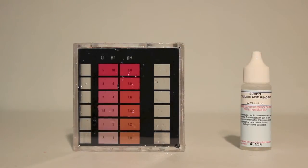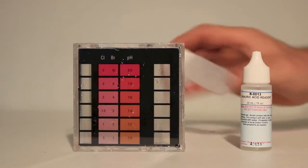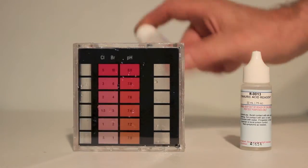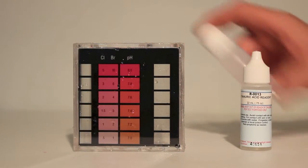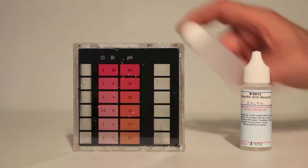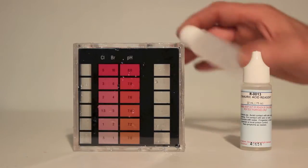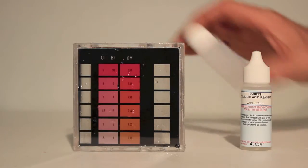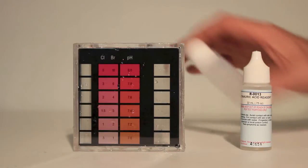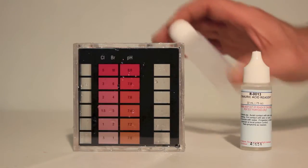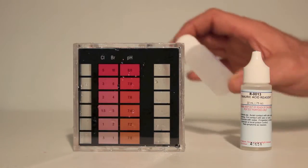So while we're shaking, we'll explain a little bit about what cyanuric acid is. Cyanuric acid is also called conditioner and stabilizer. It protects the chlorine from the ultraviolet light of the sun. It holds the chlorine in the water longer, which is why we use it outdoors and not indoors.